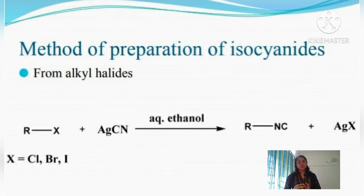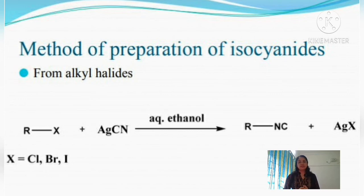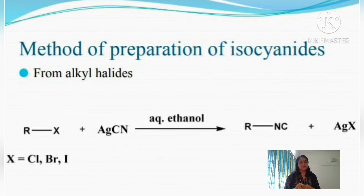For isocyanide preparation: while cyanide compounds are prepared from alkyl halides using ionic cyanide (potassium or sodium cyanide), isocyanide compounds are prepared from alkyl halides using covalent cyanide — specifically silver cyanide — in the presence of aqueous ethanol. This gives mainly carbylamine or isocyanide as the main product.